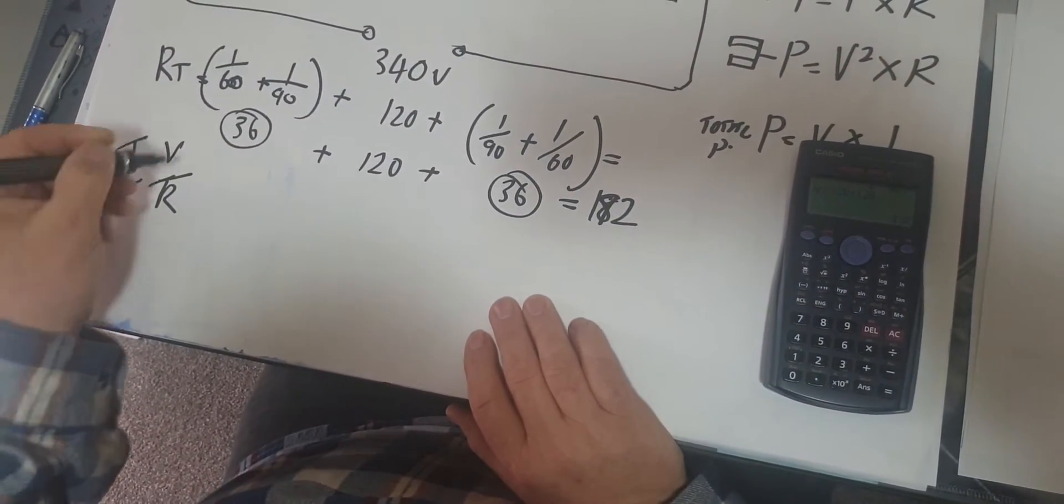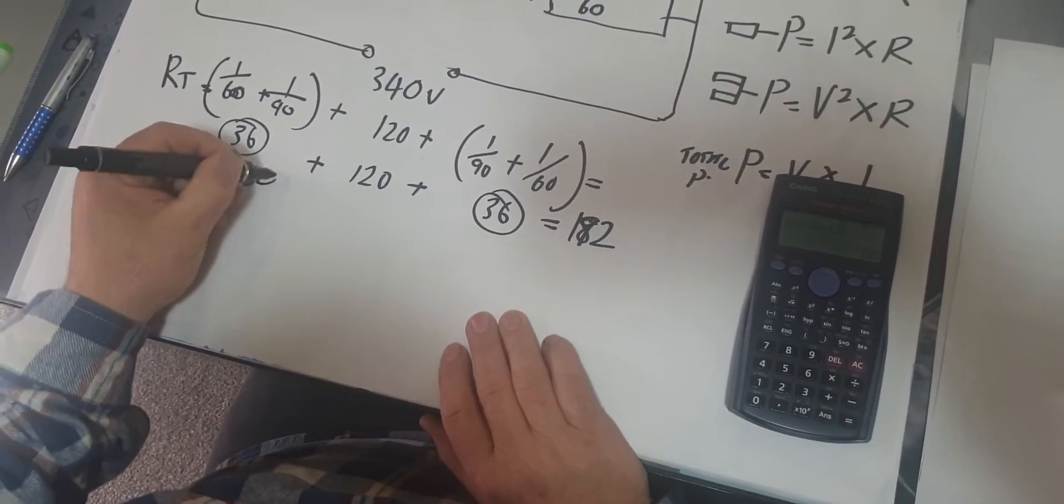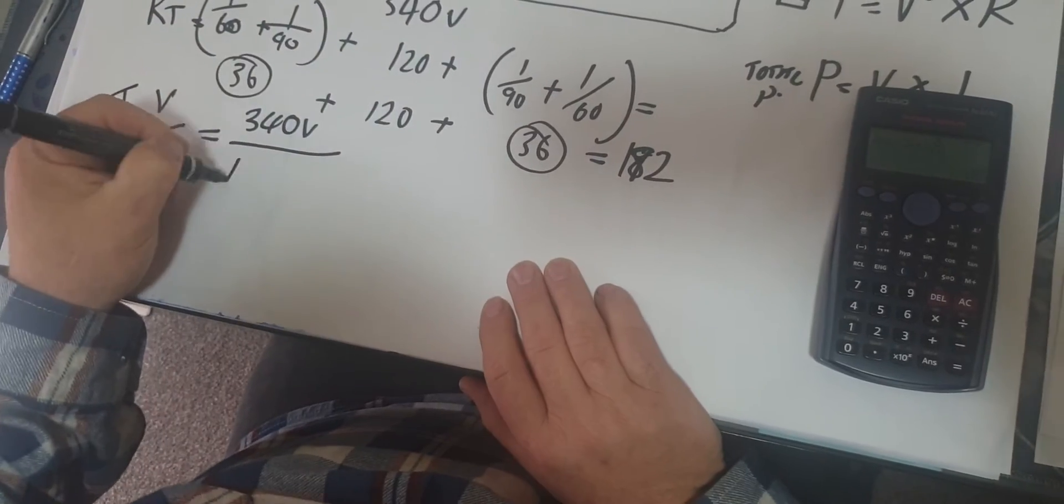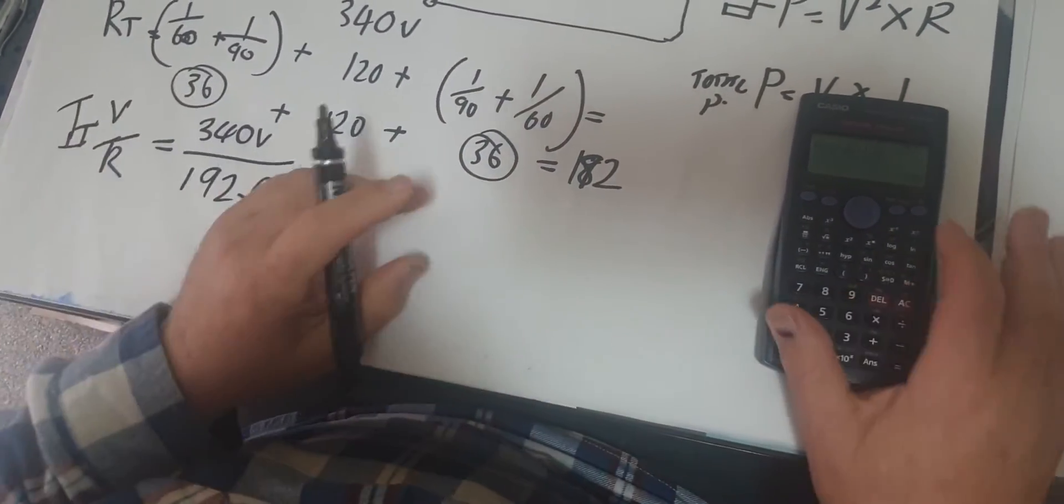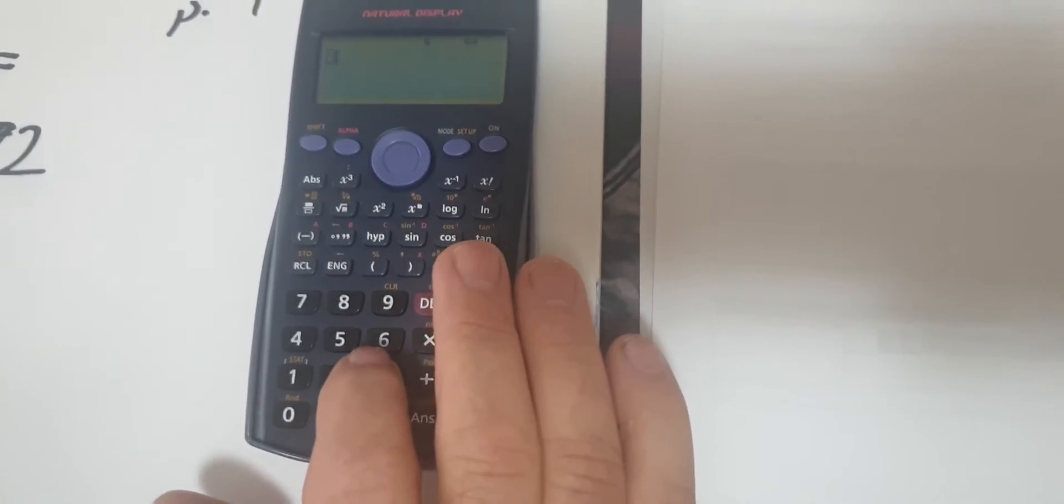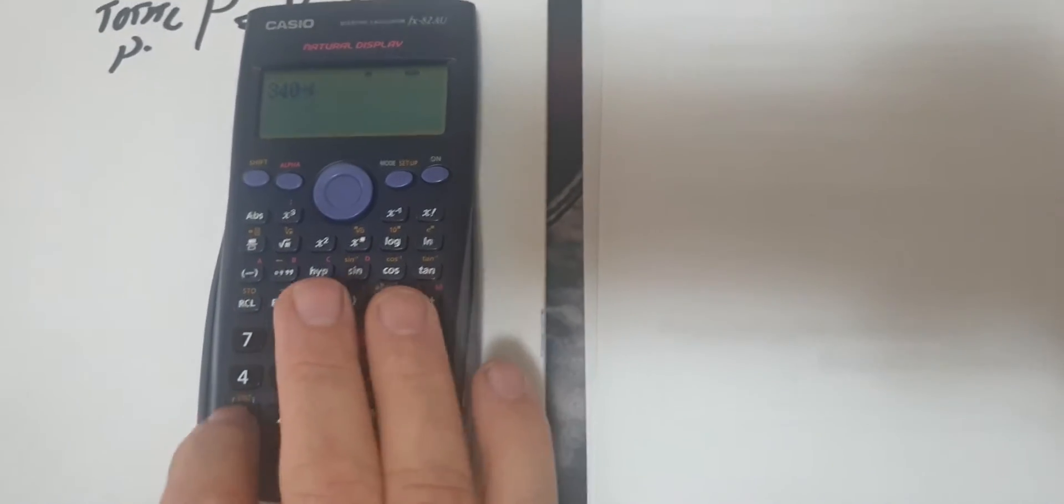V over R is the next thing for the current total. So we have 340 volts divided by the 192 ohms. What have we got? So 340 divided by 192.